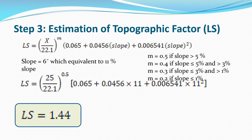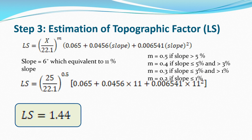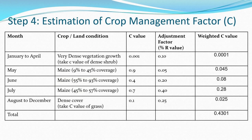Since the slope exceeds 5 percent, the exponent m = 0.5. Substituting x = 25 and m = 0.5 into the LS equation gives a topographic factor LS = 1.44. Step 4: Estimation of Crop Management Factor C. From standard tables, choosing the most appropriate value for each period: January to April (dense vegetation) C = 0.001, and the adjustment factor (percentage R value) = 0.10, giving a weighted C contribution of 0.0001.